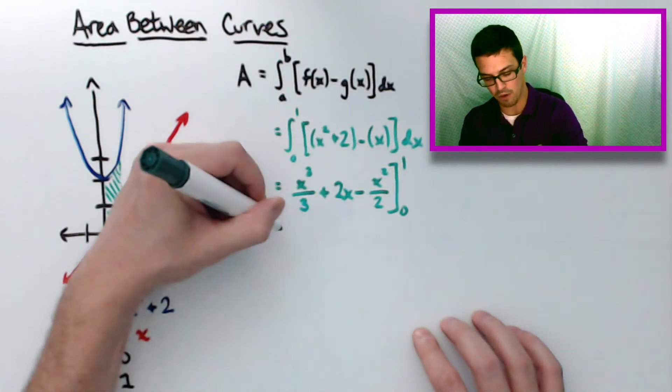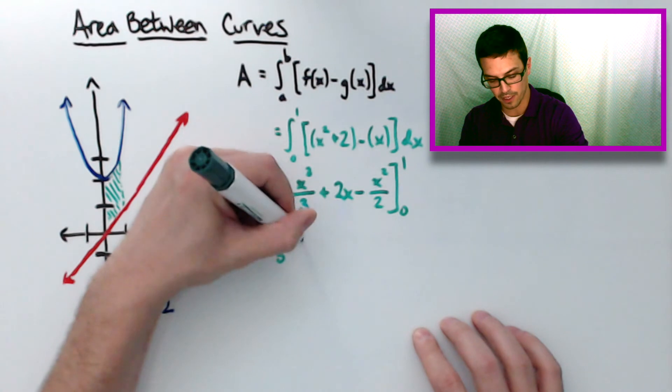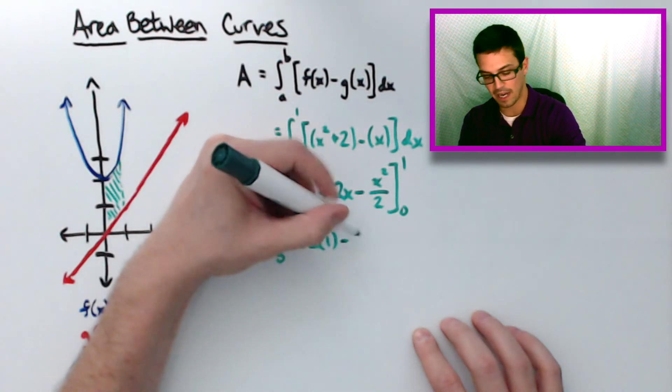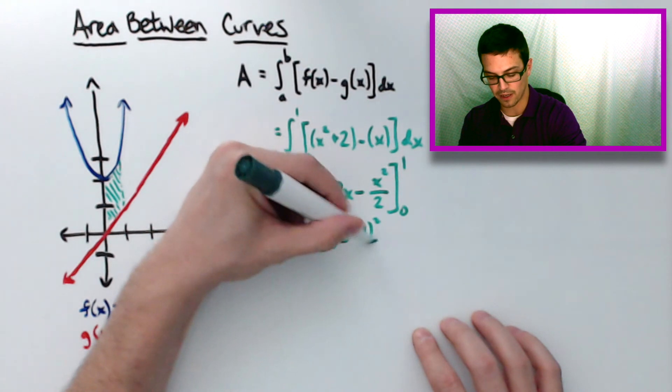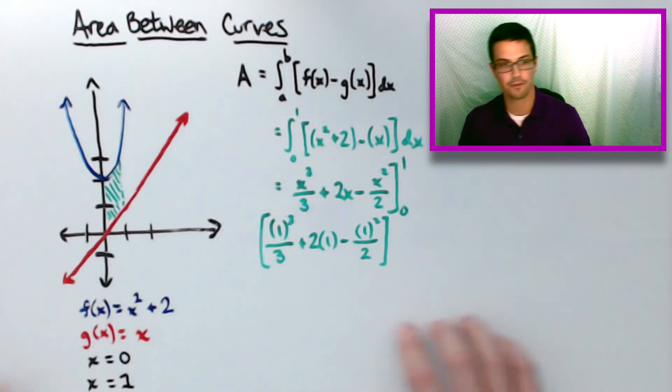So I'm going to plug the 1 in here. You'll end up with 1 cubed over 3 plus 2 times 1 minus 1 squared over 2 for that first part.